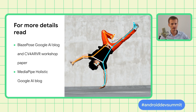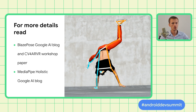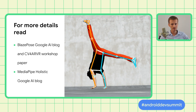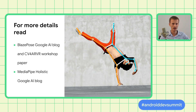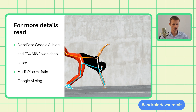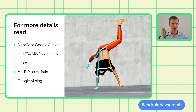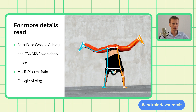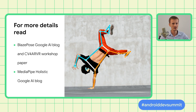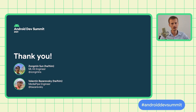For more details, you can read our blog posts recently released about BlazePose, which is the model behind the ML Kit Pose Detection API, and the Holistic Pose Tracking blog, which is a more sophisticated pipeline built on top of BlazePose providing 540 keypoints with detailed hand and face articulation. Thank you.